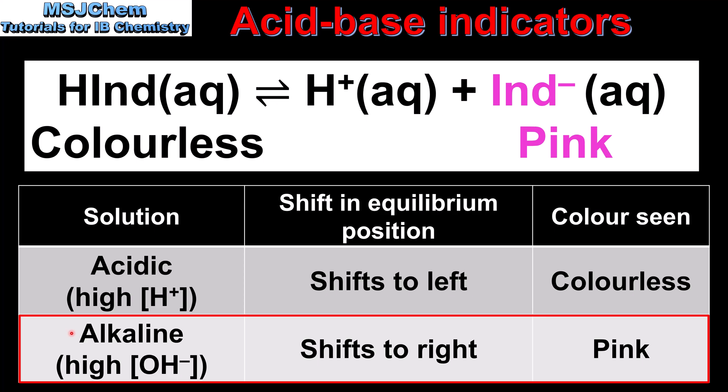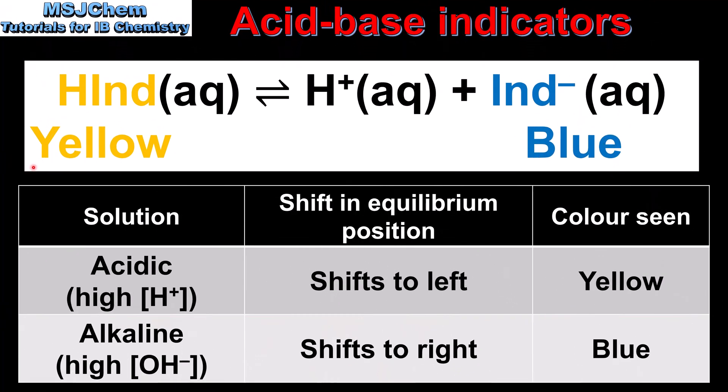The next example is Bromophenol Blue, which is yellow in an acidic solution and blue in an alkaline solution. In an acidic solution, which has a high concentration of hydrogen ions, the equilibrium position shifts to the left, in the direction of the unionized form of the weak acid, and the color seen is yellow.